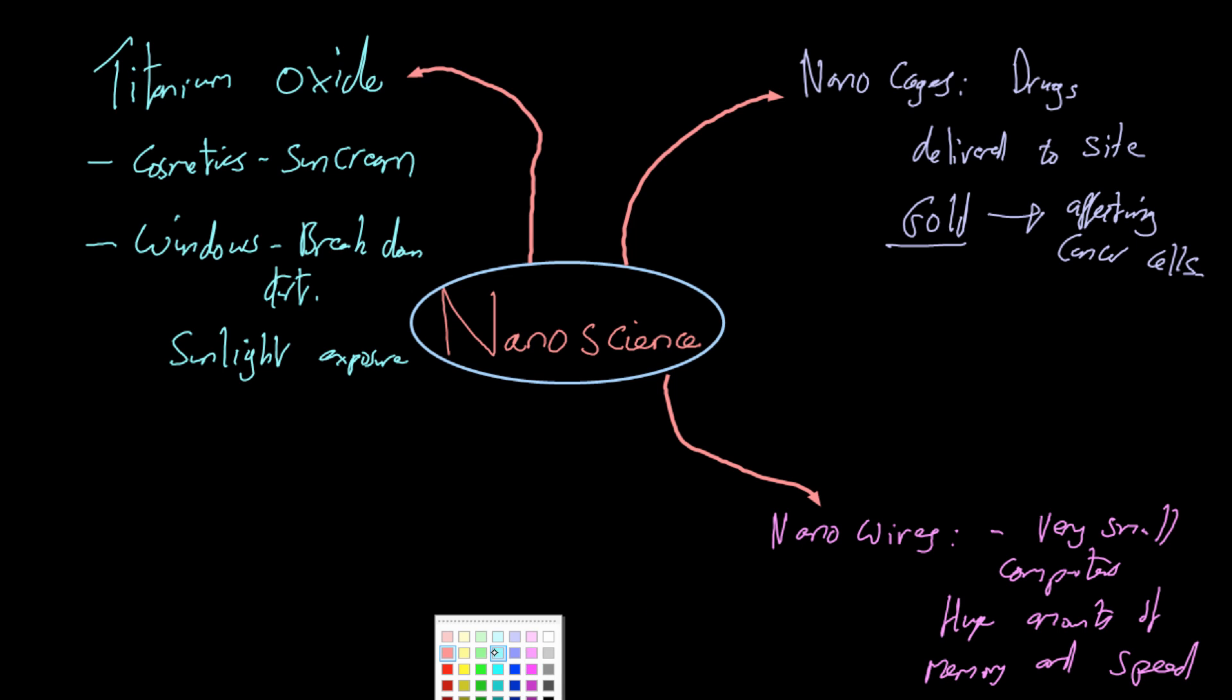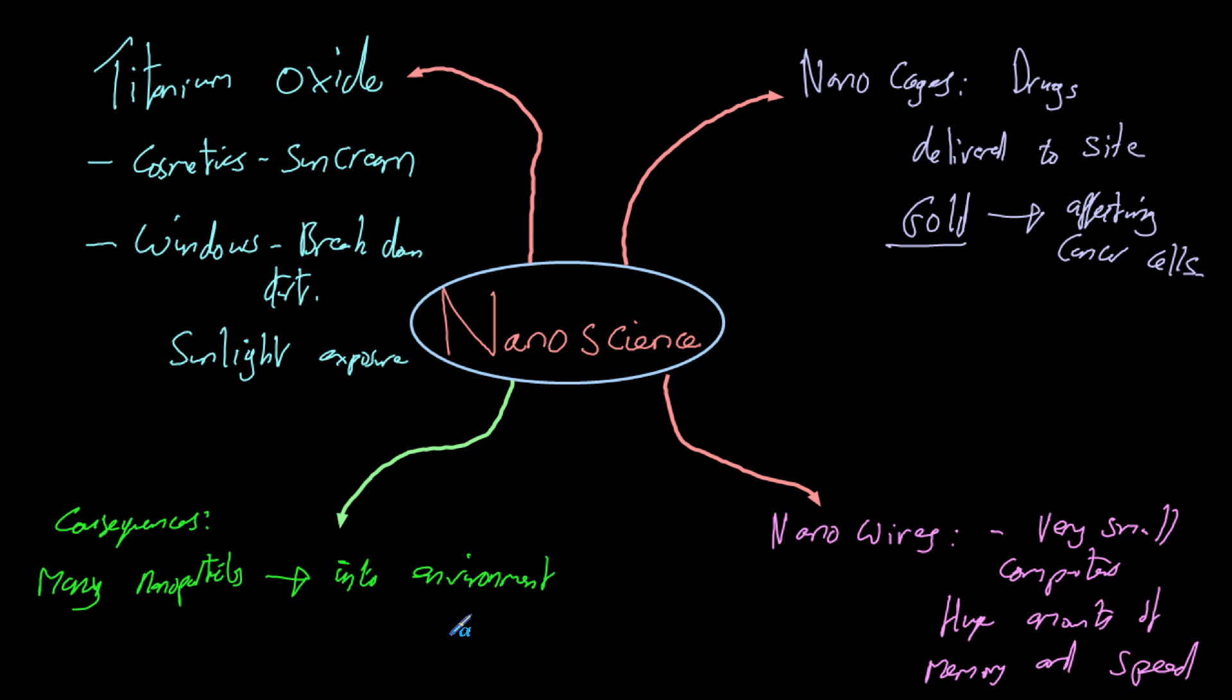And lastly, I'm going to do this arrow in a different colour. Green, I know the colours haven't really worked out, but the green here is representing a negative. Lastly, we don't know many of the consequences of using nanotechnology. So consequences. Many nanoparticles can be released into the environment. So into environment. For example, if nanotechnology found its way into a river or into soil, will this damage the ecosystem? Will it damage the plants that are growing in the soil? Well, who knows? But the likelihood is that it's going to have some effect.